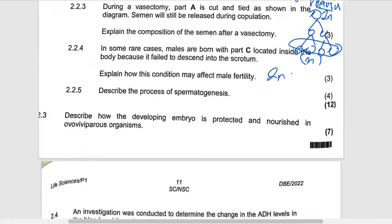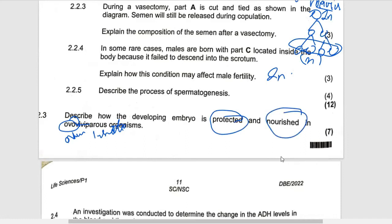How is the developing embryo protected and nourished in ovoviviparous animals? These are animals where 'ovo' means egg and 'vivi' means inside — so the egg is developing inside the mother's body, but it does not obtain nutrients from the mother; it obtains nutrients from the ovum. That's why it's called ovoviviparous. You have two things to answer: protection and nourishment.